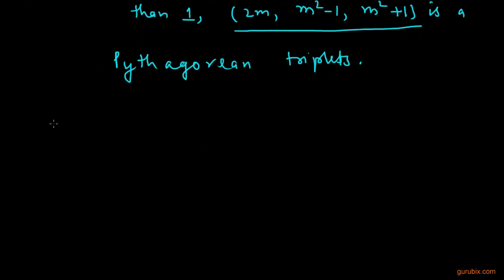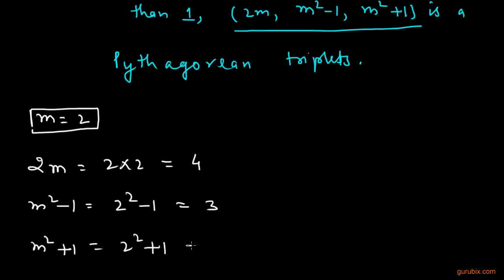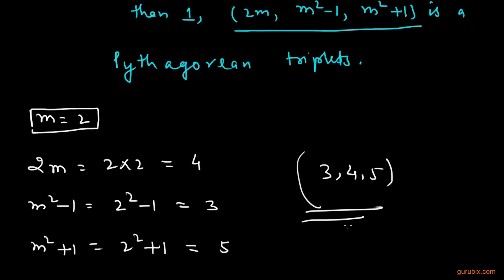Suppose we have m equals 2 and we want to find a Pythagorean triplet. First, we find 2m, which is 2 into 2, equals 4. Next, we find m square minus 1, which is 2 square minus 1, equals 3. And then m square plus 1, which is 2 square plus 1, equals 5. So we can write 3, 4, 5 as a Pythagorean triplet.